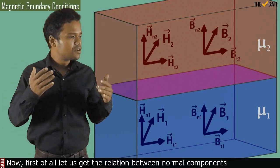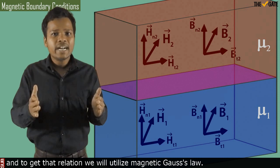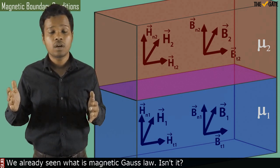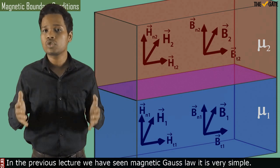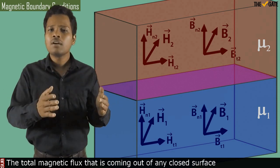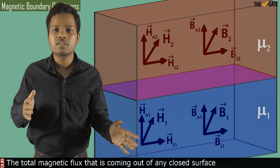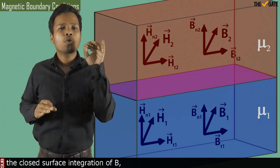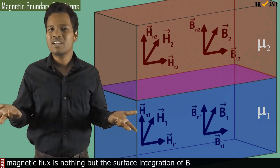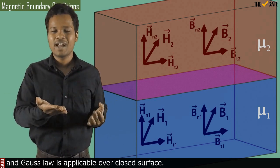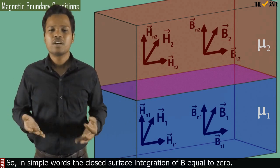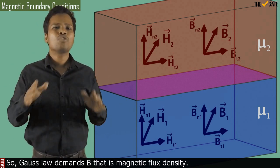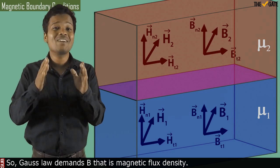First, let us get the relation between normal components, and to get that relation we will utilize Magnetic Gauss Law. We already seen Magnetic Gauss Law in the previous lectures — it is very simple: the total magnetic flux coming out of any closed surface is always equal to zero. In simple words, the closed surface integration of B, the magnetic flux density, equals zero.